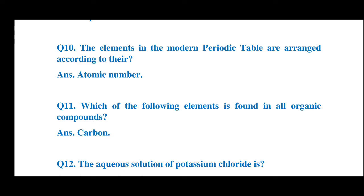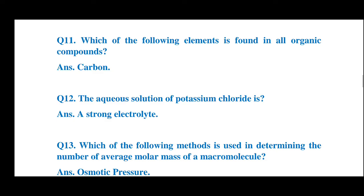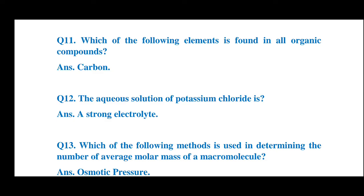The elements in the modern periodic table are arranged according to their atomic number. Question number 11: Which of the following elements is found in all organic compounds? The answer is carbon. Carbon is found in all organic compounds.